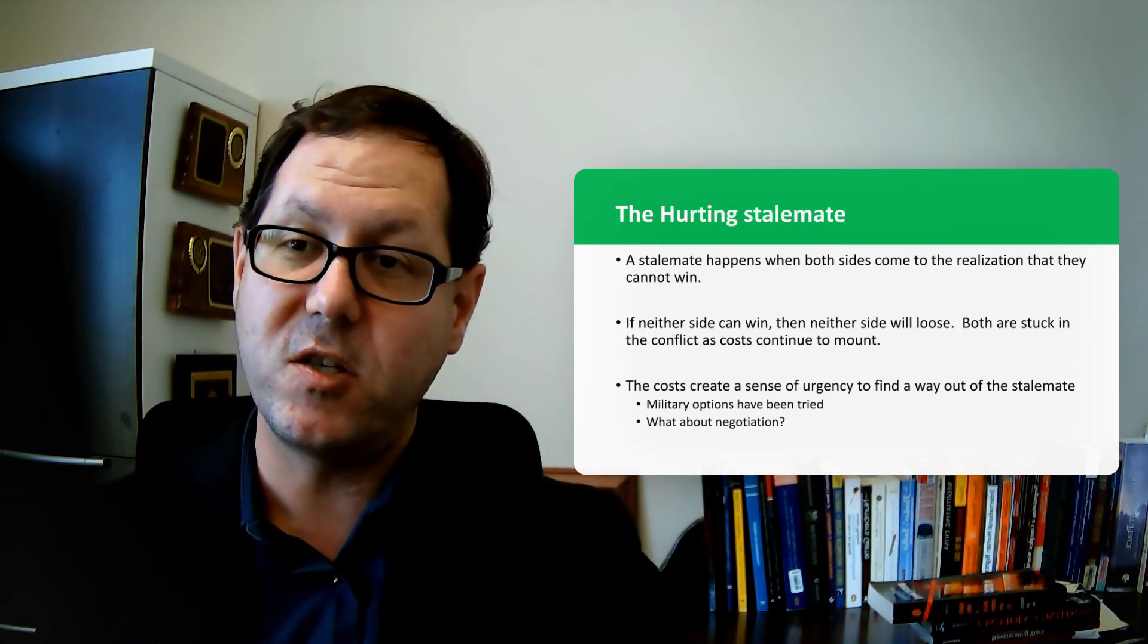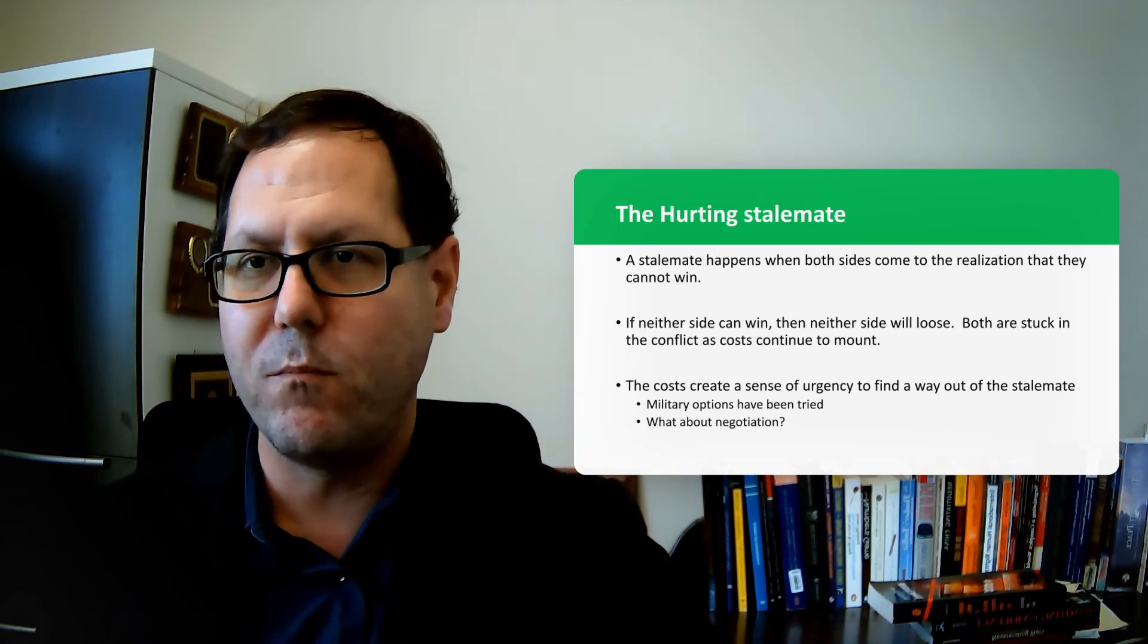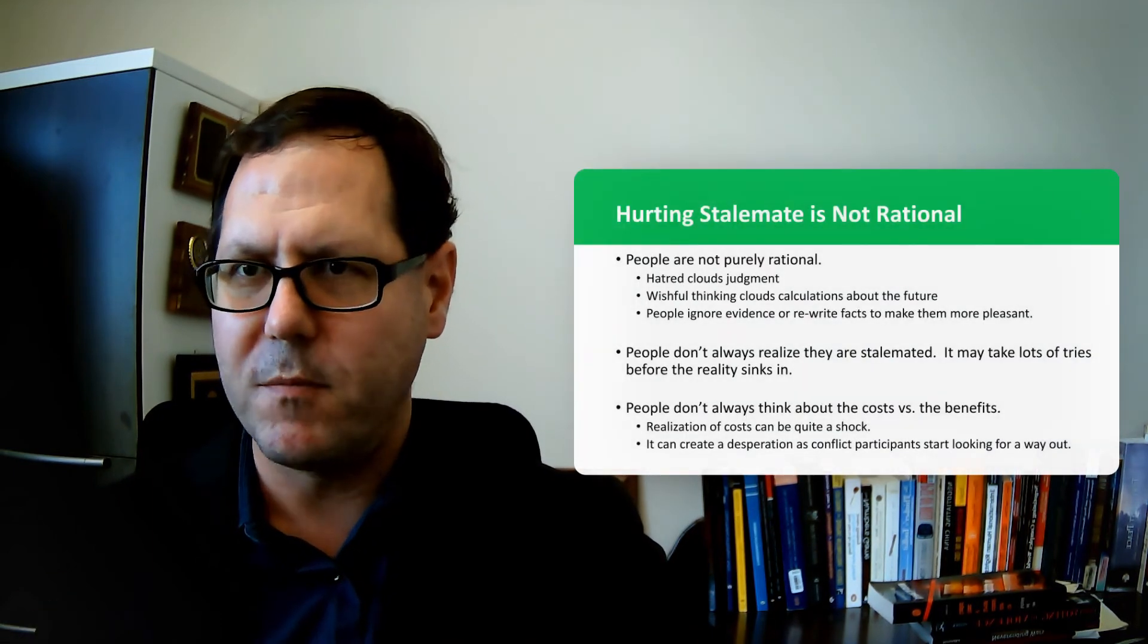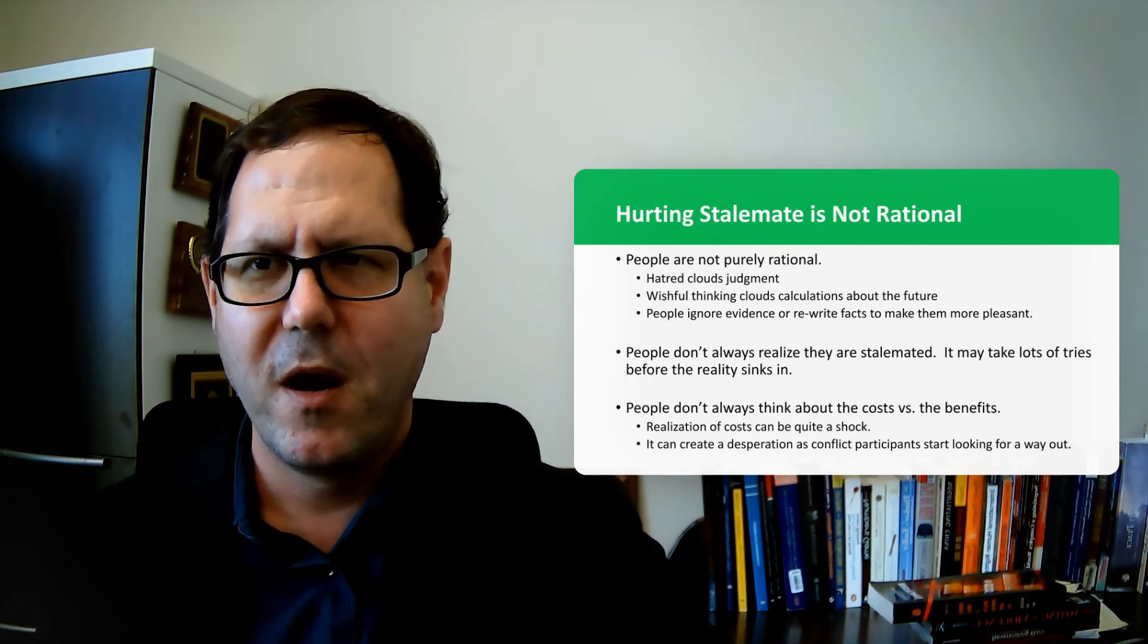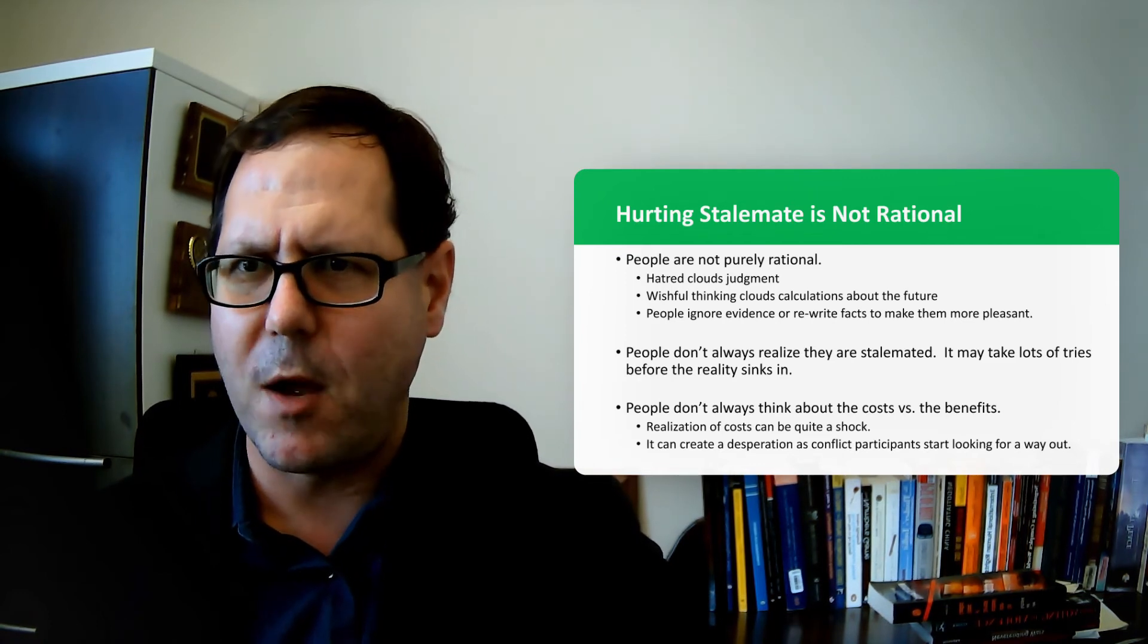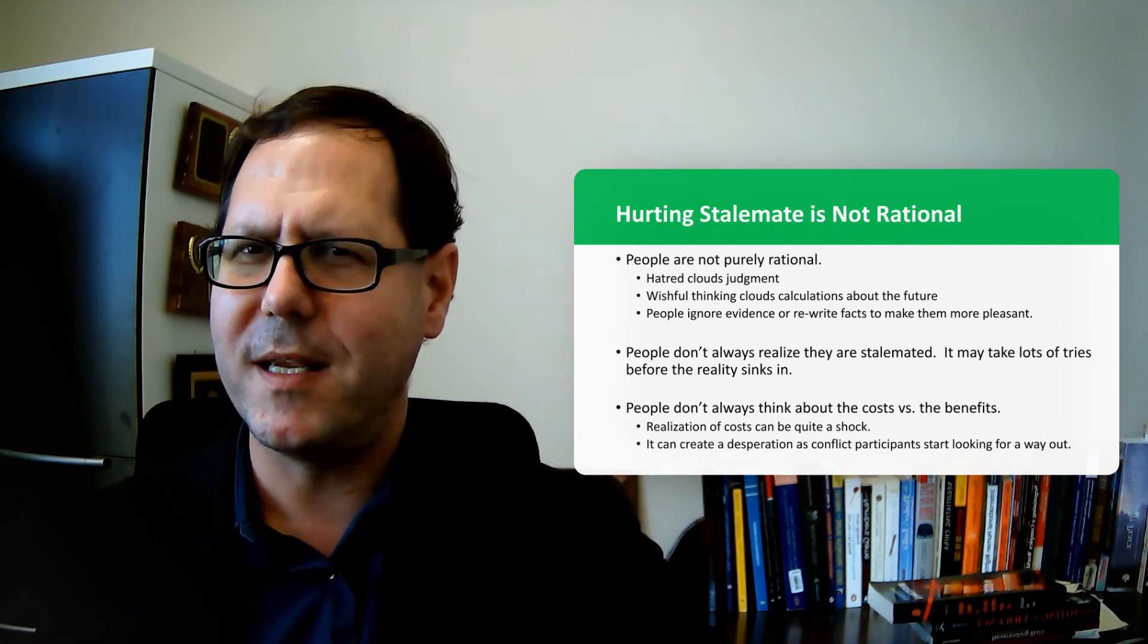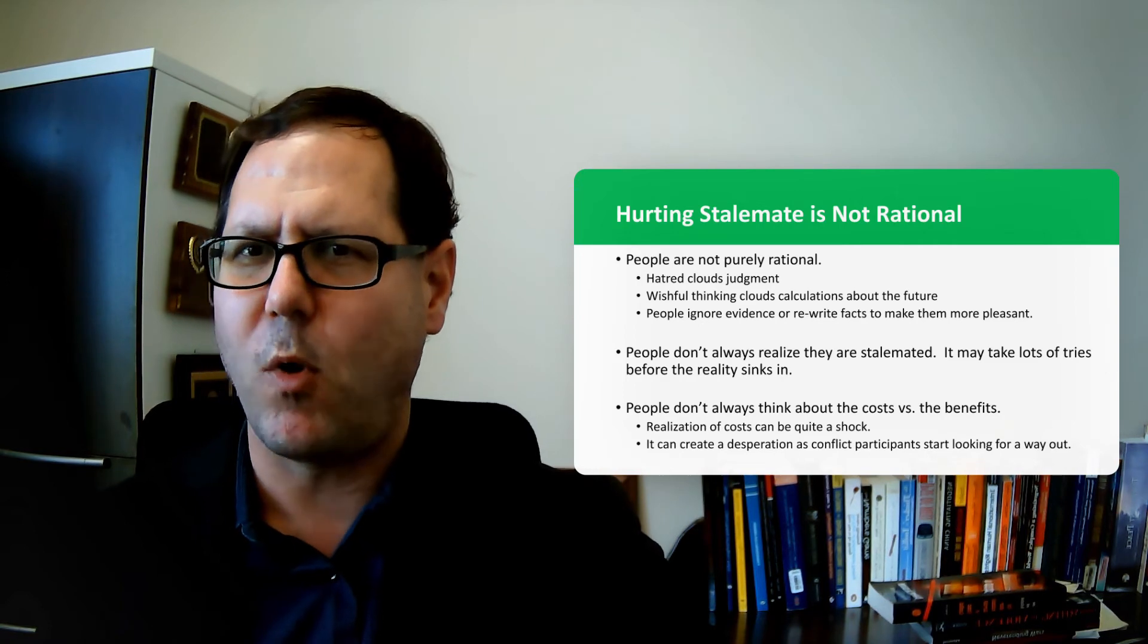But when those two things do come together, those are the moments in which you can actually see parties moving to the bargaining table. And I think really importantly, from Zartman's perspective, is that this isn't necessarily a rational process. It's not like there's a triggering moment where a certain amount of pain causes parties to think about the hurting stalemate. This is something that is, I don't want to say irrational, but maybe there's a component of emotion. Maybe there's a component of identity that gets woven up into things.